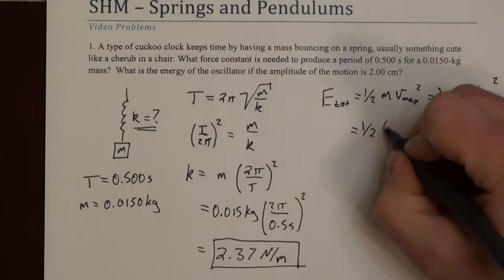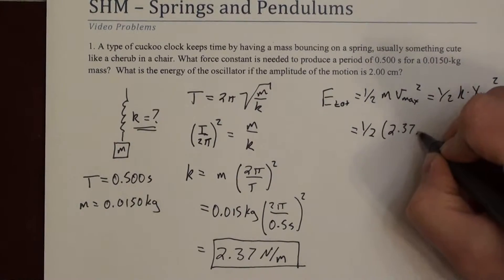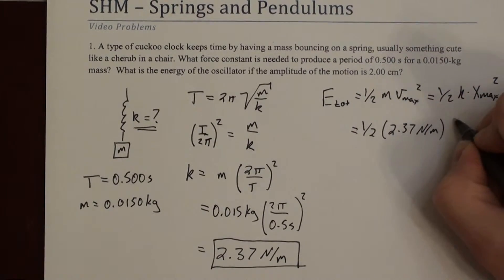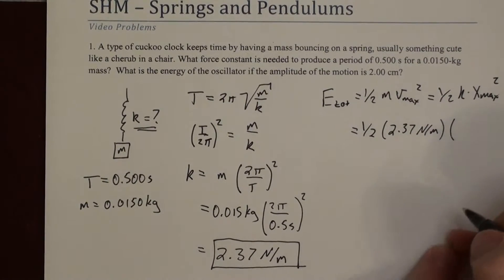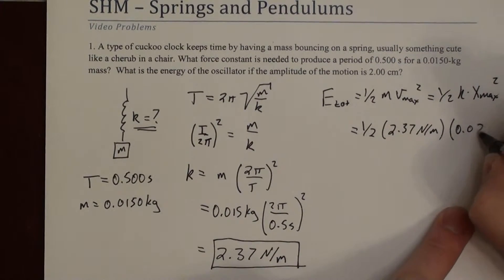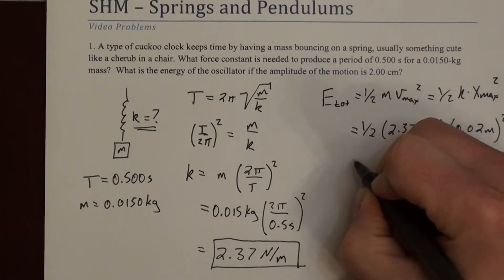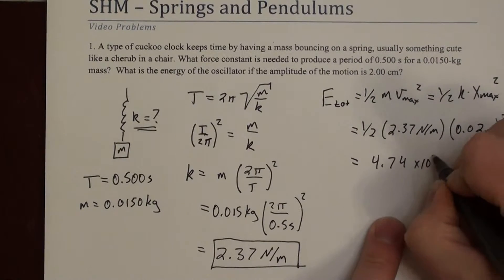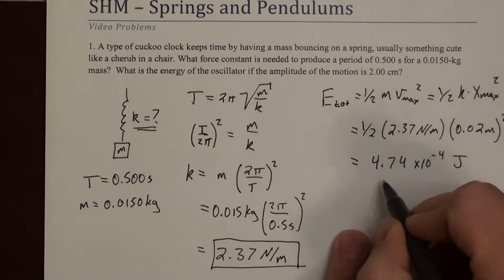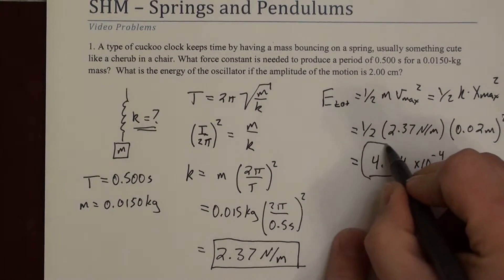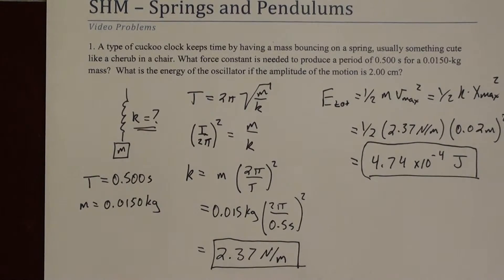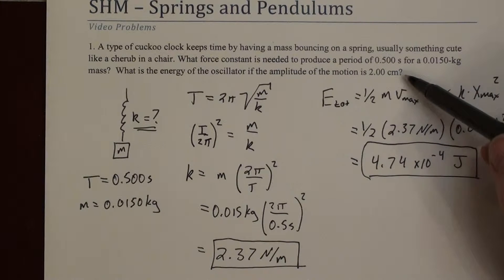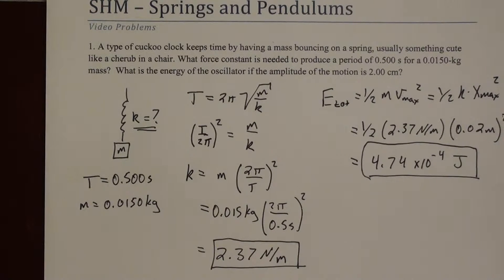So that's ½ × 2.37 × (0.02 m)² — converting 2 centimeters to SI units as 0.02 meters. When you do that math, you get 4.74 × 10⁻⁴ joules. That's fairly small, but this is a 15-gram cherub bouncing up and down 2 centimeters, so there's not a lot of energy there — we don't expect much.